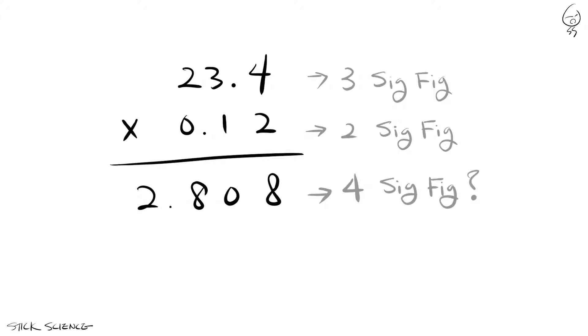In our example, the results of the calculation gave us what seems to be four significant figures. So to match the precision, we'll have to truncate to the first two significant figures and round up or down.